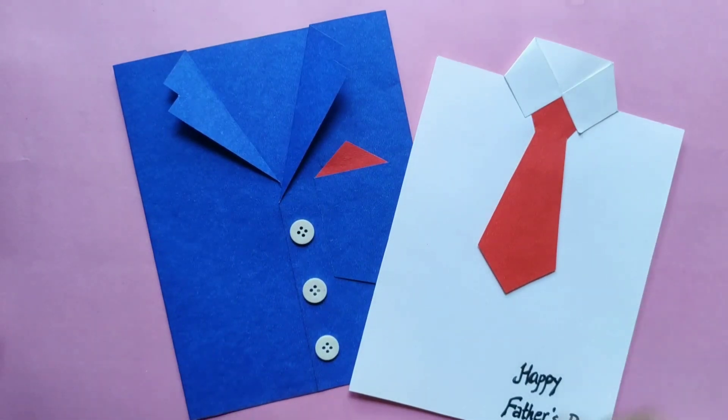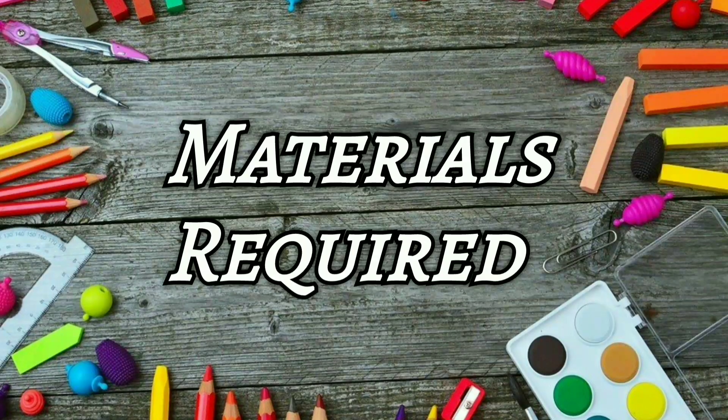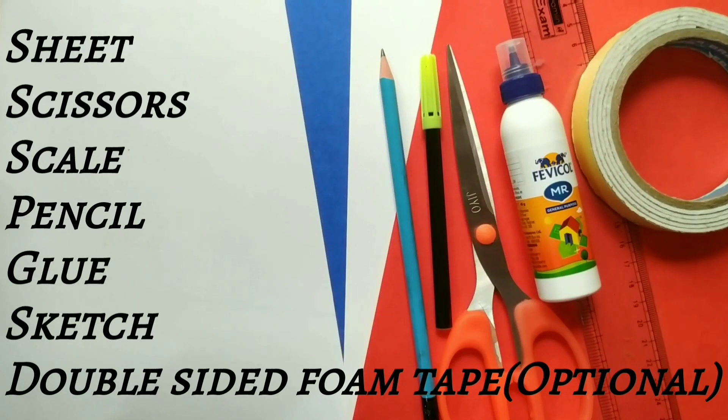Check the description box for the Instagram link. The materials required are sheet, scissors, scale, pencil, glue, sketch and double-sided foam tape which is optional.